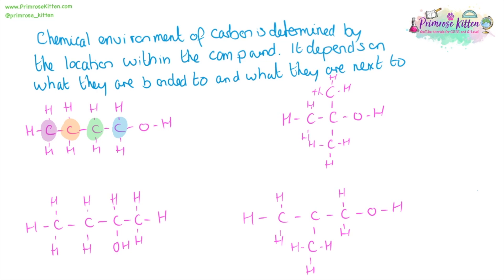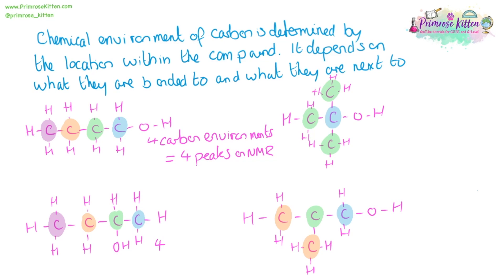But-1-ol has four different carbon environments. As we move through the compounds, we can start to see that the methyl groups become interchangeable and they are in the same carbon environments. If something has four carbon environments it will have four peaks on a carbon NMR; two carbon environments gives two peaks, and three carbon environments gives three peaks.